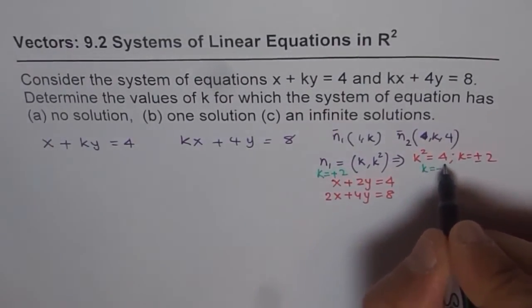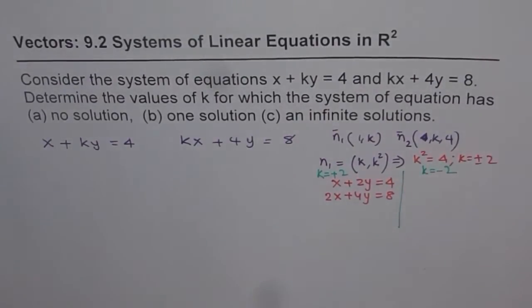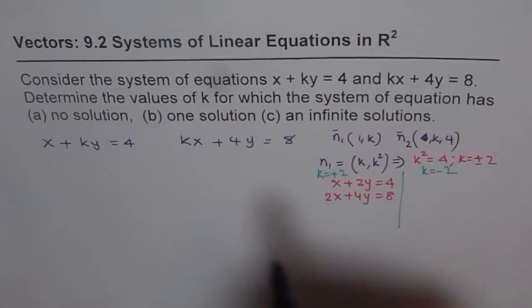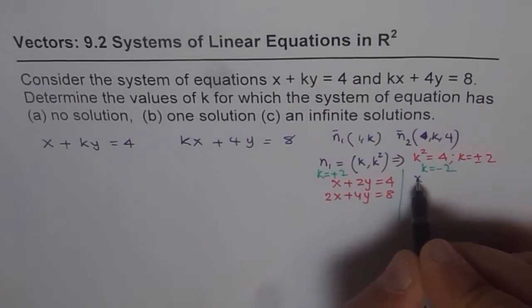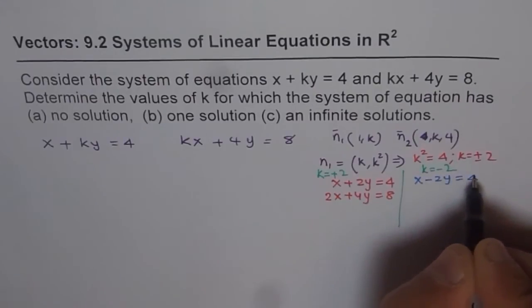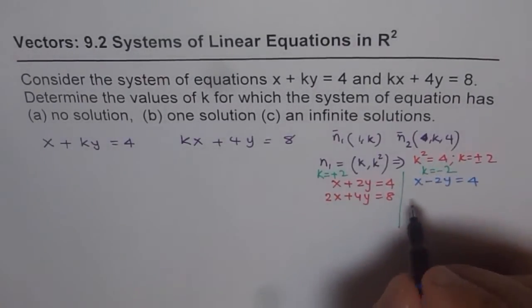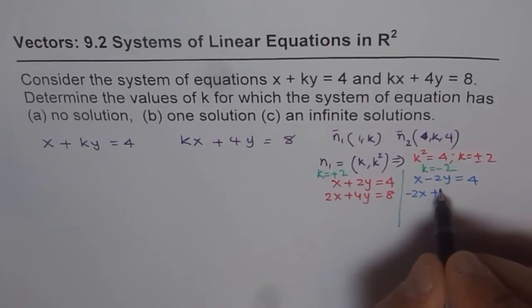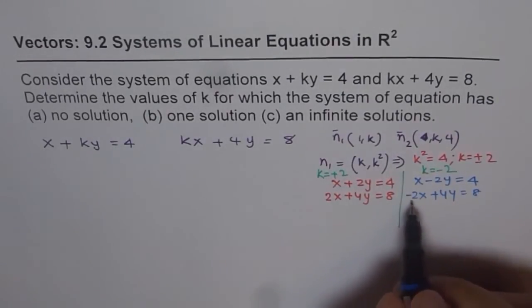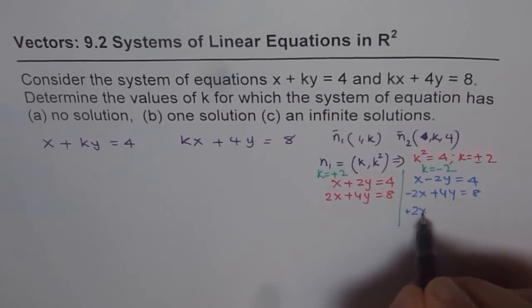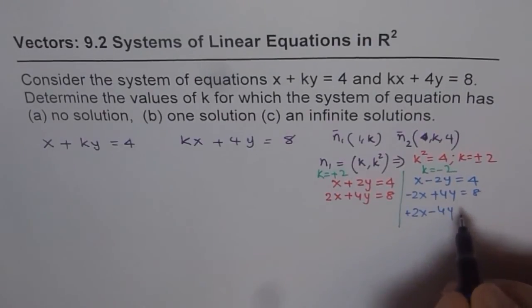If I use k equals minus 2, I get x - 2y = 4. And if I do minus 2 here, I get -2x + 4y = 8. I can always divide by minus 2. So if we divide by minus 2, we get x - 2y = -4.